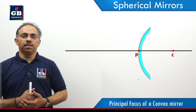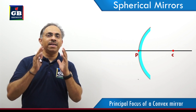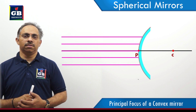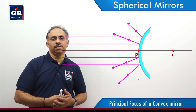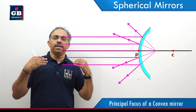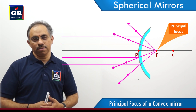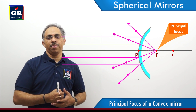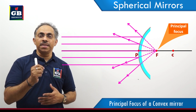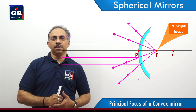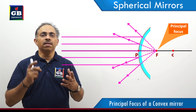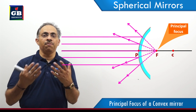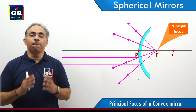In the case of a convex mirror, when we take incident rays — a parallel beam of light incident parallel to the principal axis — after reflection, we have a divergent beam of light. When I retrace them back behind the mirror, all these rays appear to come from a single point that lies on the principal axis of the convex mirror. This particular point from where all the reflected rays appear to come from, in the case of a convex mirror, is known as the principal focus.